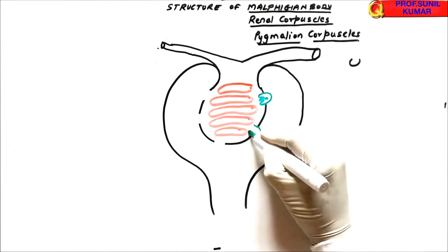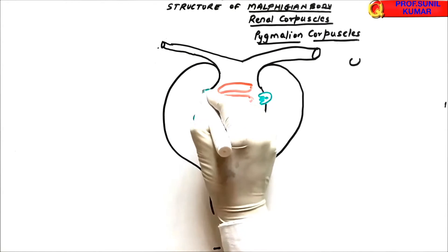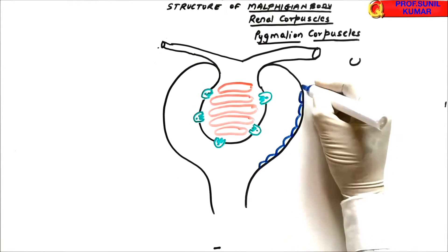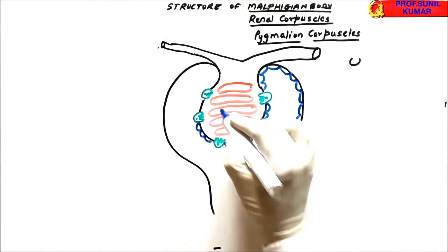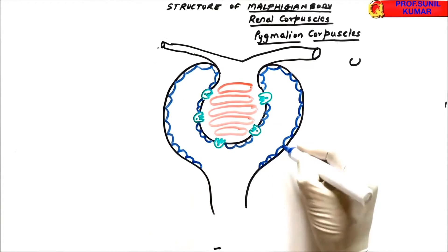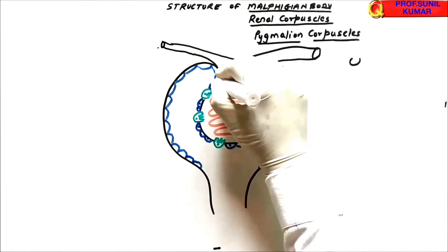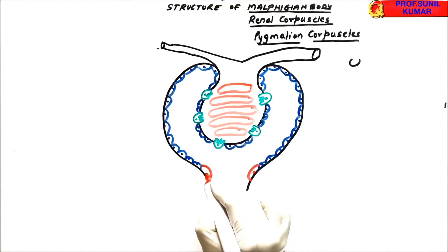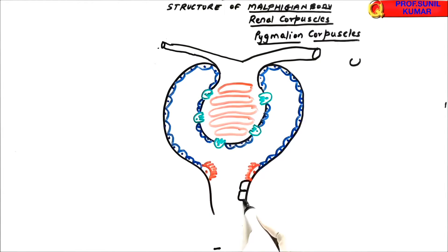We need to make the inner layer a little bit open so we can draw the special cells called podocytes. The outer layer is lined by continuous squamous epithelium, while the inner layer is not continuous squamous epithelium because of the specialized cells called podocytes. The neck of the Bowman's capsule is made up of ciliated epithelium cells, while the PCT is made up of cuboidal epithelium cells.